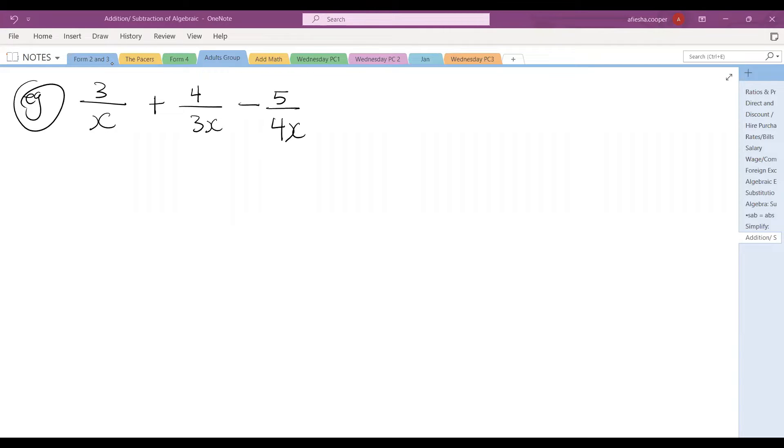Our second example, instead of the variables being in the numerator, we now have the variables in the denominator. So again, same steps follow. We find the LCM. Now this one is not going to be as straightforward as the first one because we now have to find the LCM between letters and variables. So what we could do is do them in parts. What is the LCM of 1, 3, and 4?